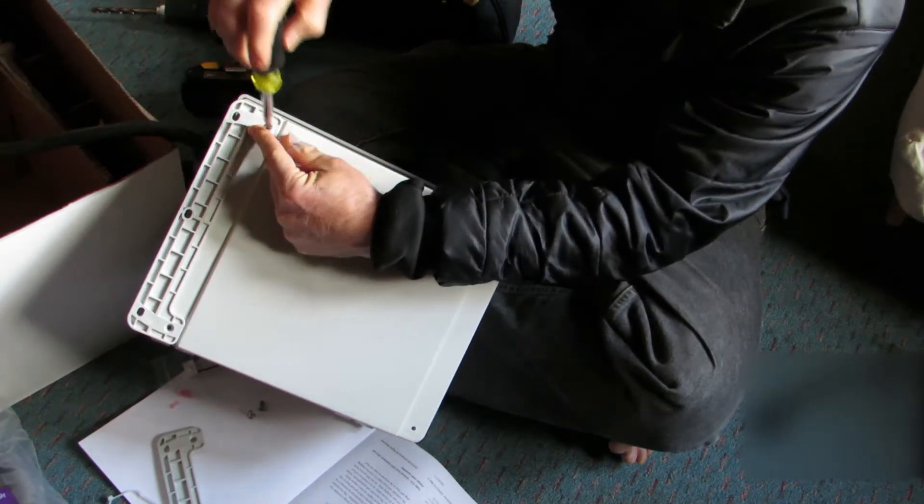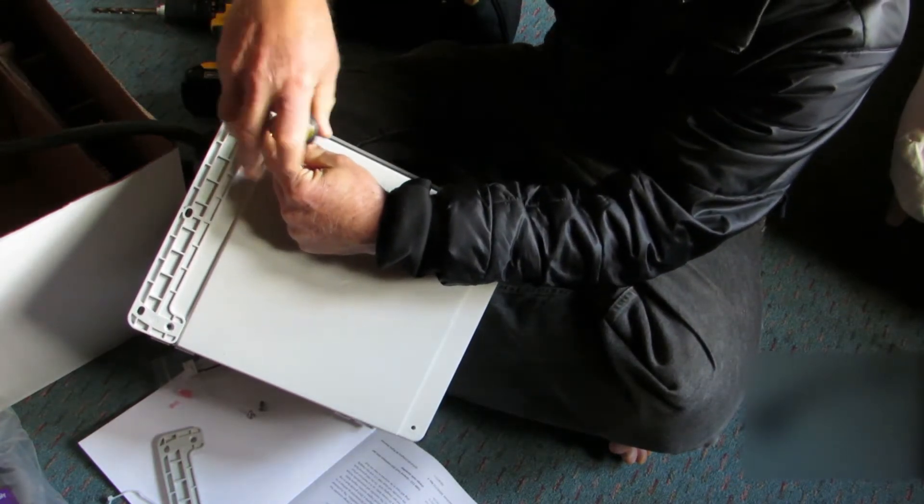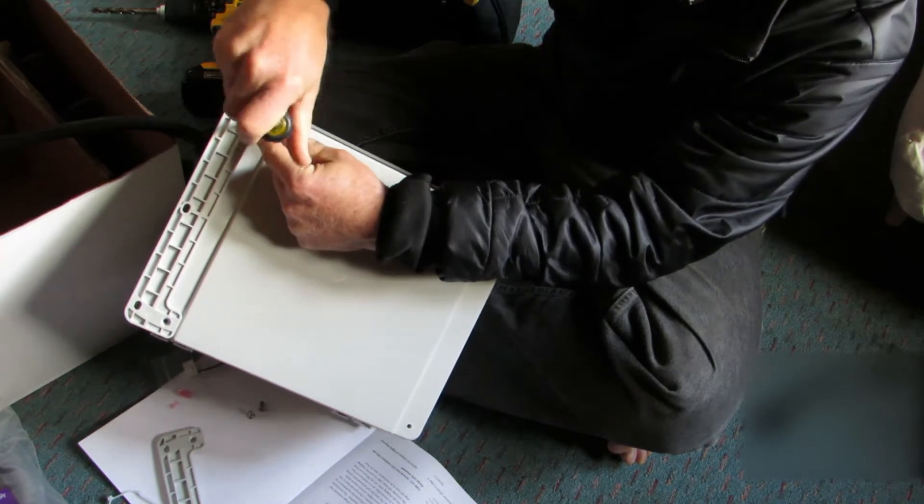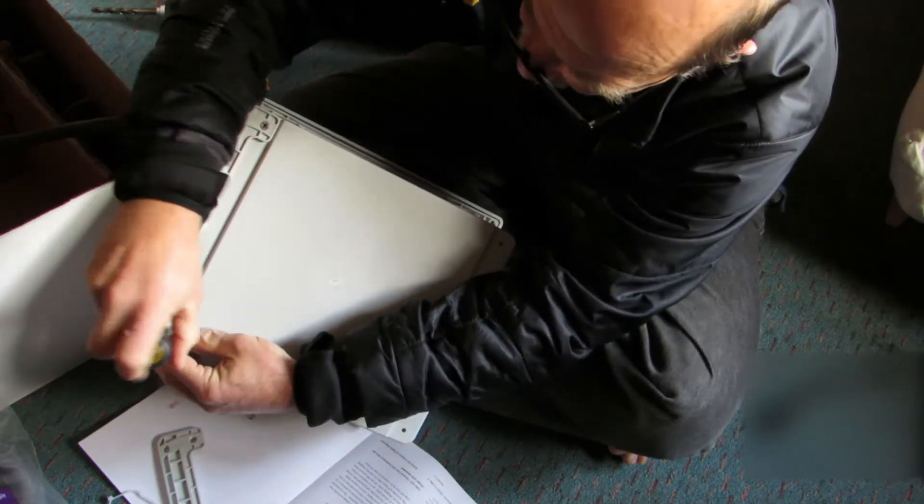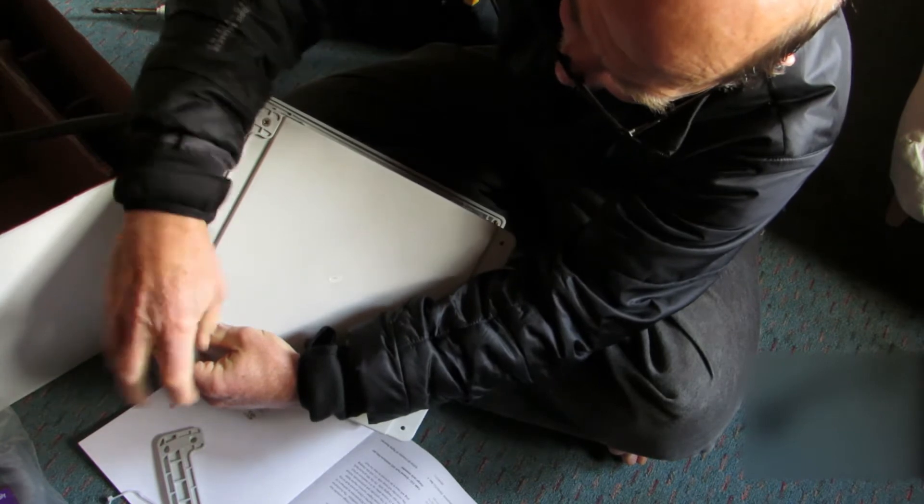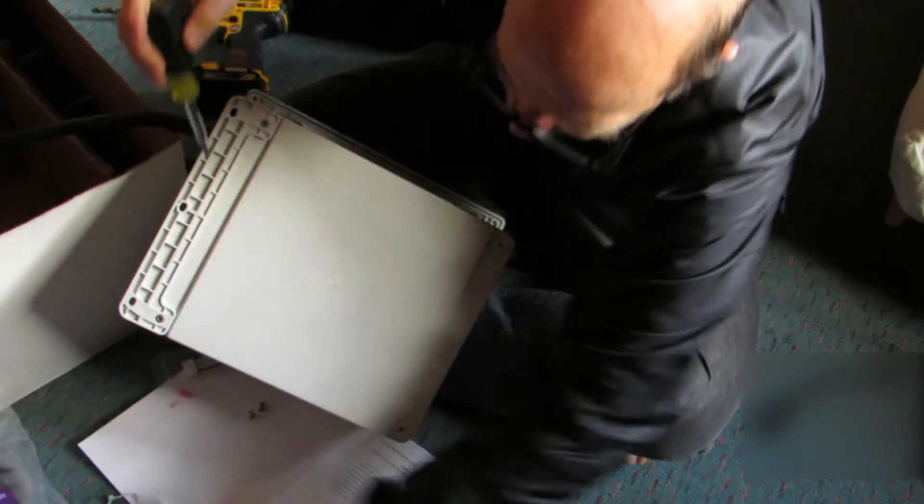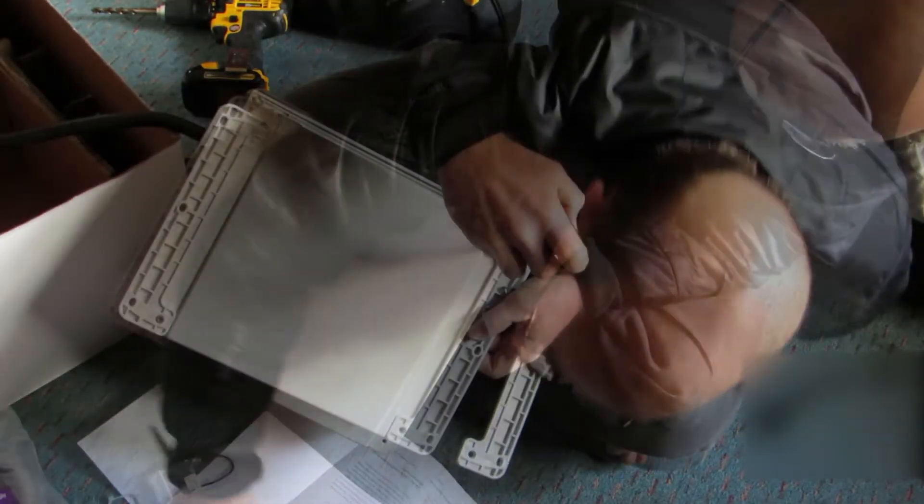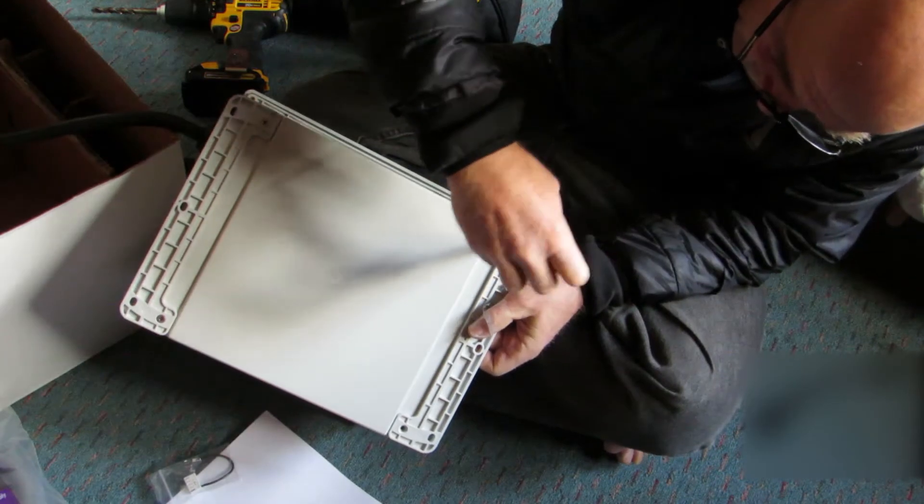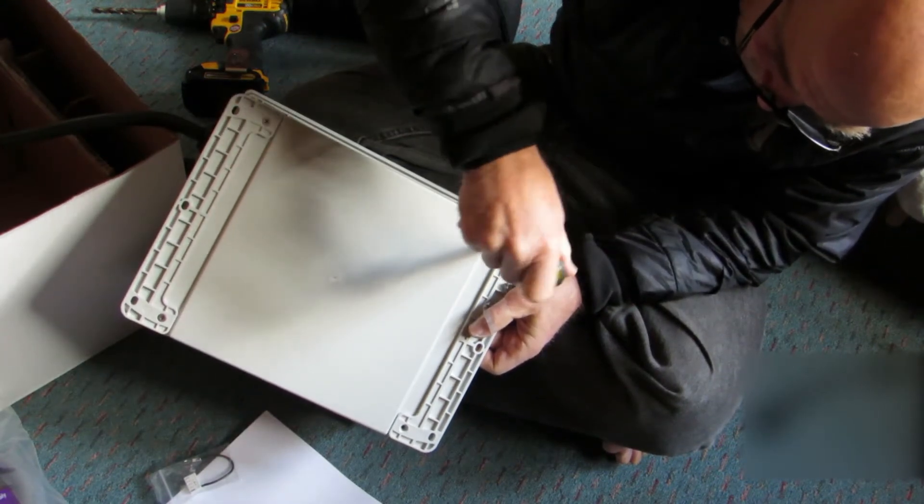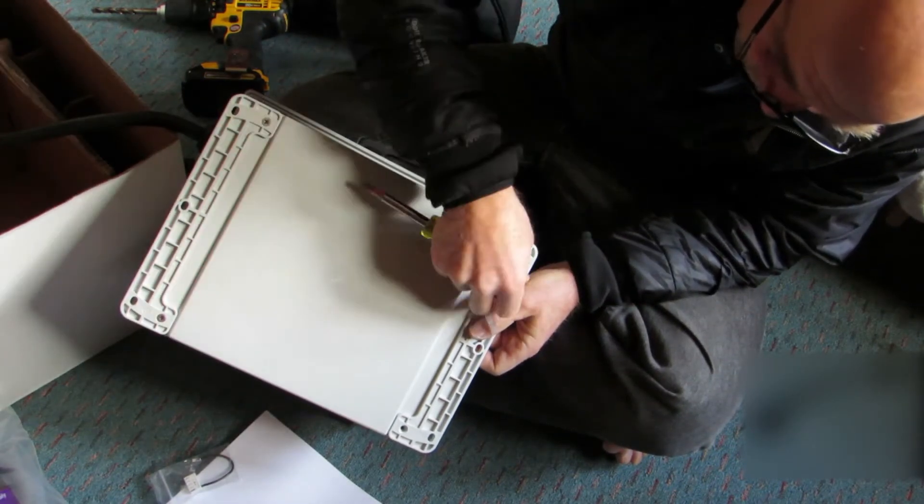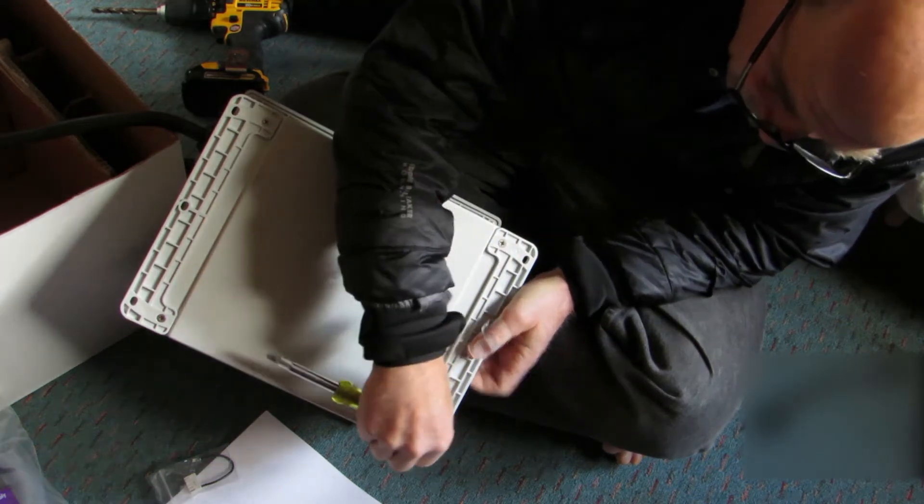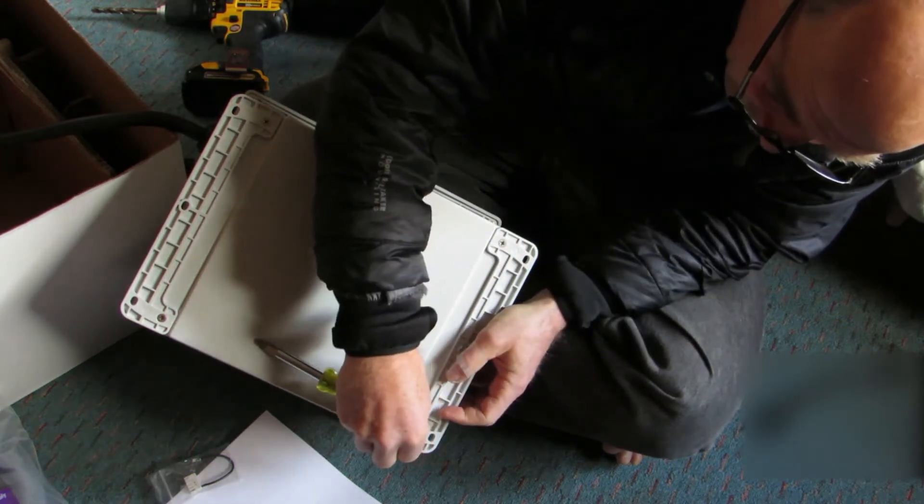One of the first steps is to put these ears onto the back of the charging station. They supply you with four screws for that purpose, four Phillips head screws, basically look like wood screws. Put them in, turn them down, and there's two ears, four screws. This is the way that the box mounts to the wall. This provides you with six places that you can attach this to the wall.